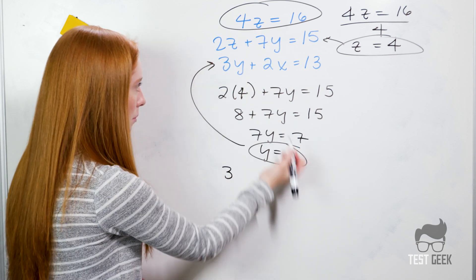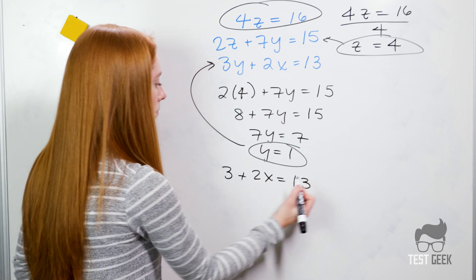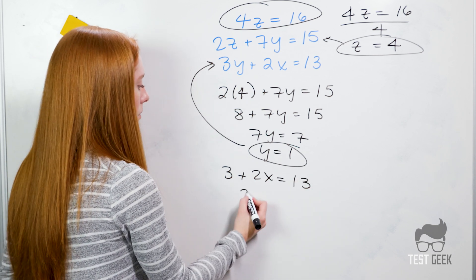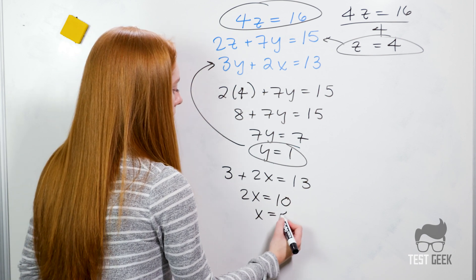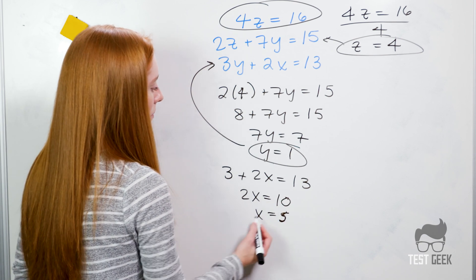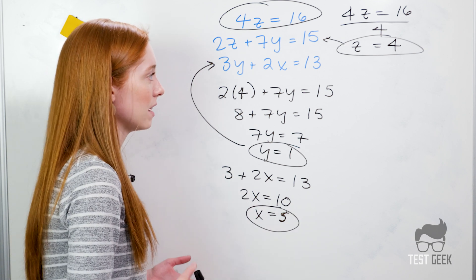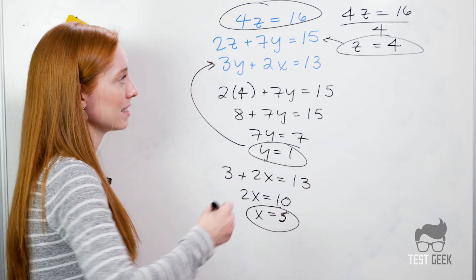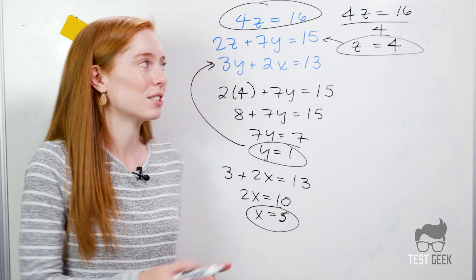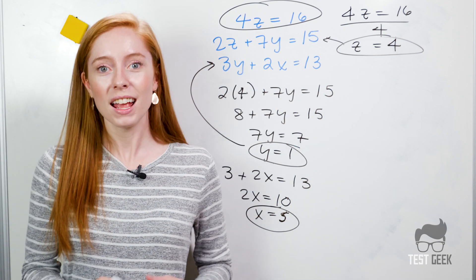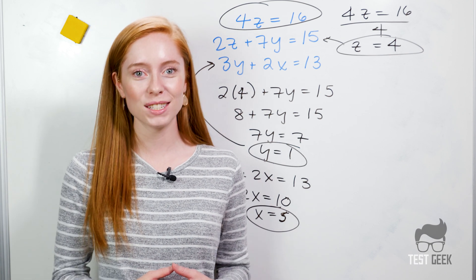Let's finally solve for x. We plug y into the third equation: 3 times 1 plus 2x equals 13, so 3 plus 2x equals 13. Subtract 3 and we get 2x equals 10, so x equals 5. Now we've solved for all three variables: x equals 5, y equals 1, and z equals 4. Remember, you can always start with the easiest option first — start with your simplest equation and work from there. Now you're ready to tackle the practice questions for this section.